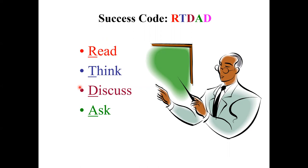You need to ask questions like 'why and why not?' and 'what if?' You can do reading, thinking, and discussion and keep asking, but finally you have to do the work. That completes the success code for postgraduate research.